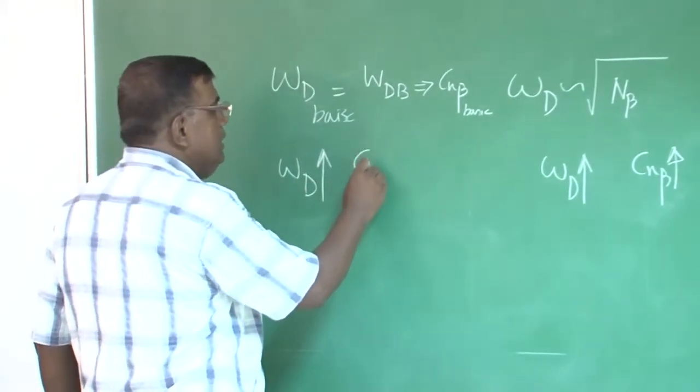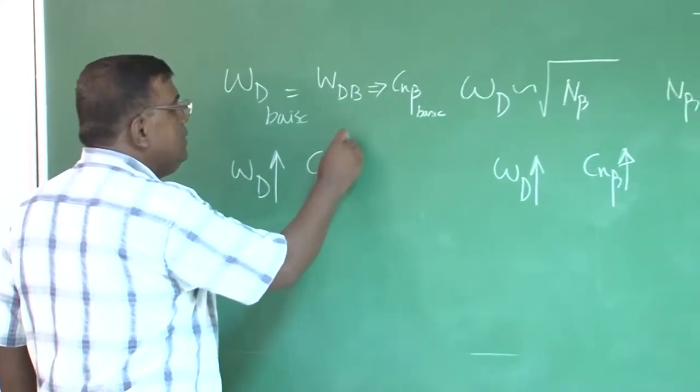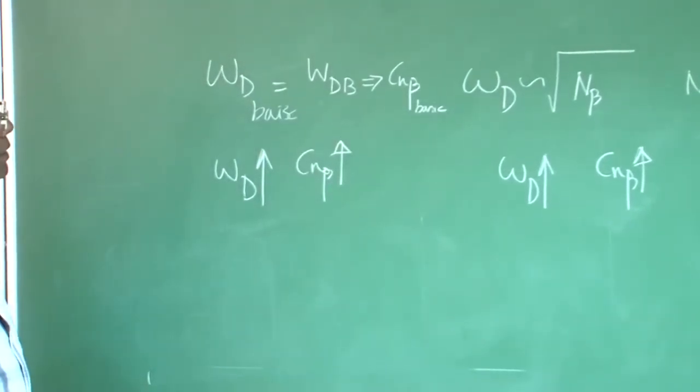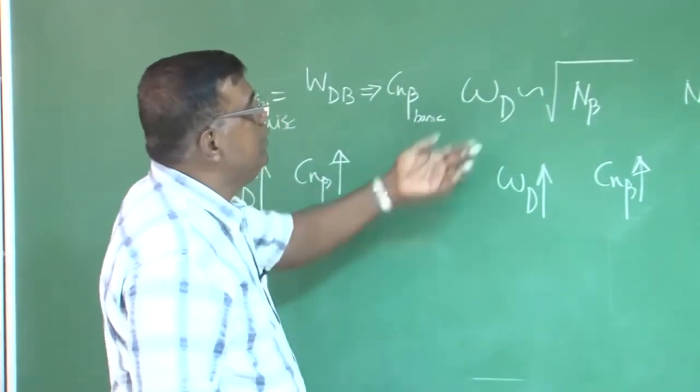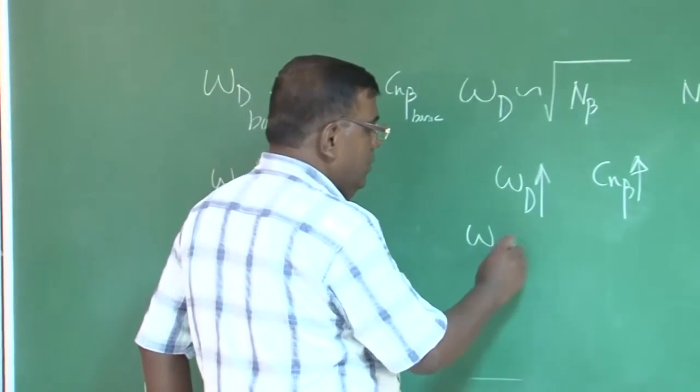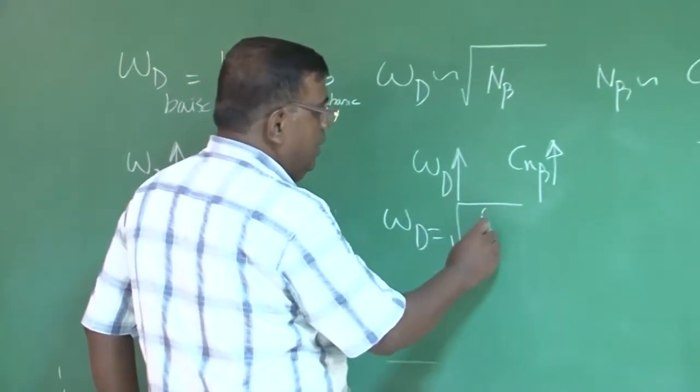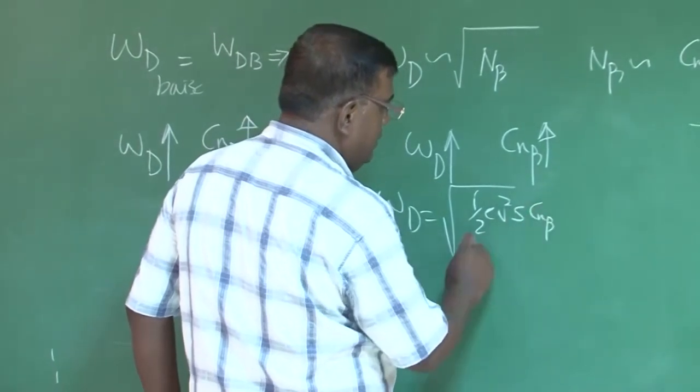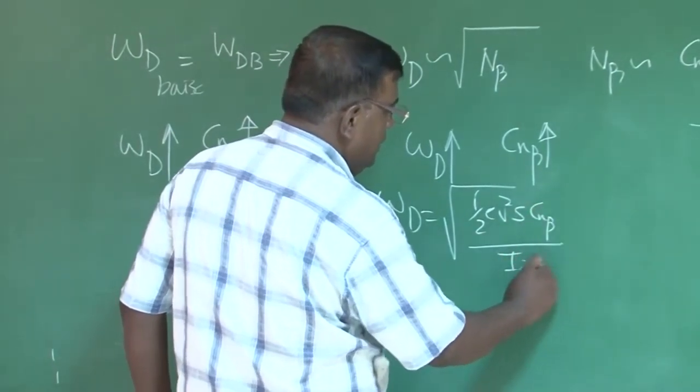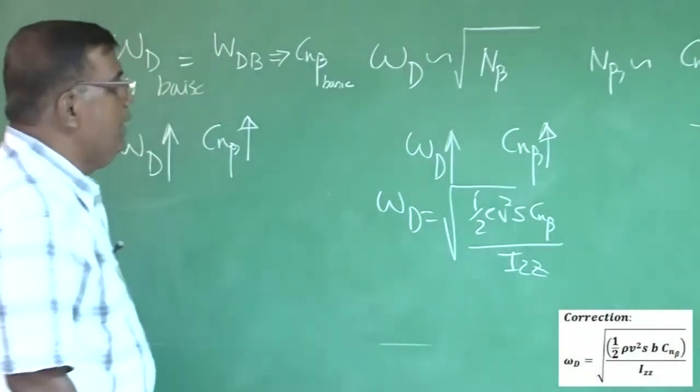Now, you want to increase and to increase dutch roll frequency. Hence, c n beta has to be increased, how much it has to be increased? For that for approximate value, I can use the expression for omega d,